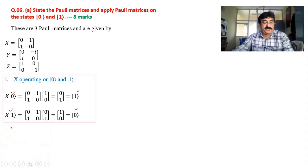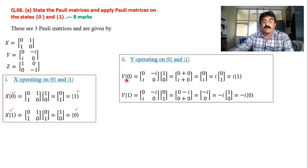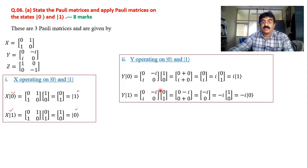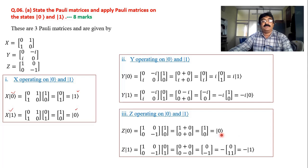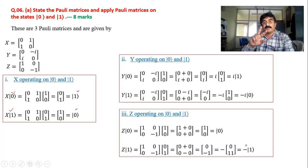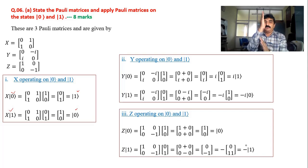X is called the state flip operator or state flip gate. For Y: Y operating on ket zero gives i times ket one, and Y operating on ket one gives minus i times ket zero. For Z: when Z operates on ket zero, ket zero remains undisturbed, but when Z acts on ket one it becomes minus ket one — a 180-degree phase change. Therefore Z is called the phase flip operator.